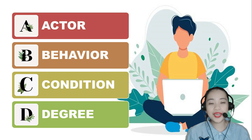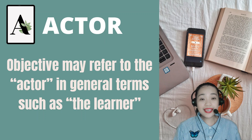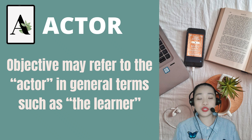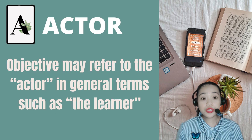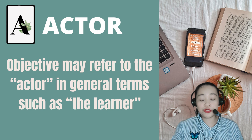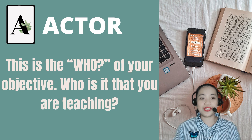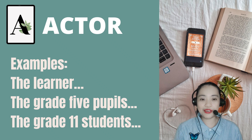Let's elaborate on Mager's ABCD model for instructional objectives. A stands for actor or audience — it answers the question: who? Who are your learners? Every learning objective should state something that the learner should do. Your objective may refer to the actor in general terms such as 'the learner.' This is the who of your objective. Examples are: the learner, the grade 5 pupils, the grade 11 students.